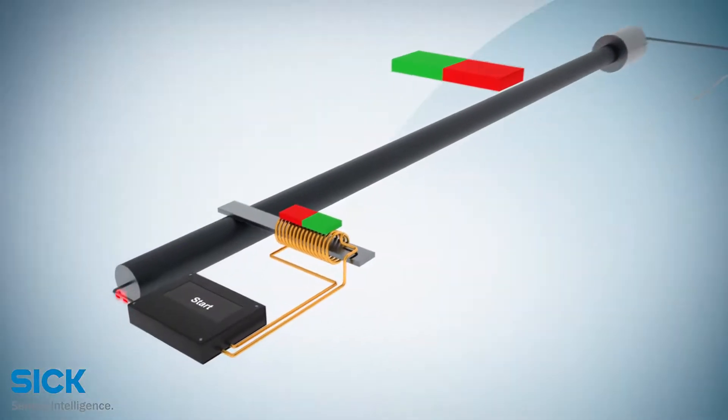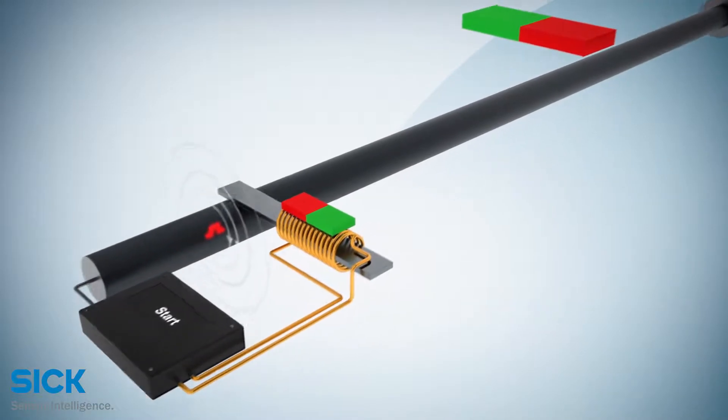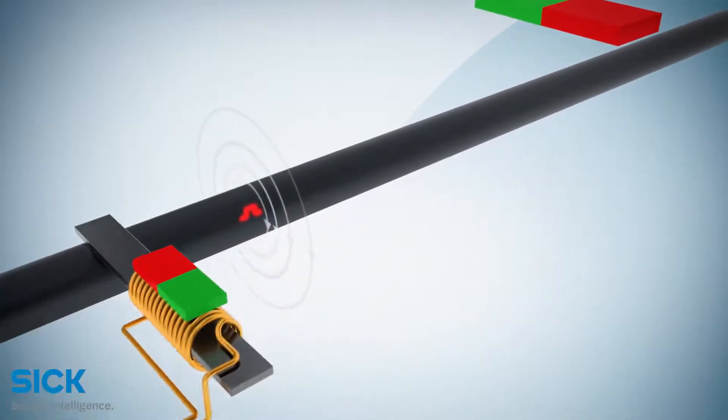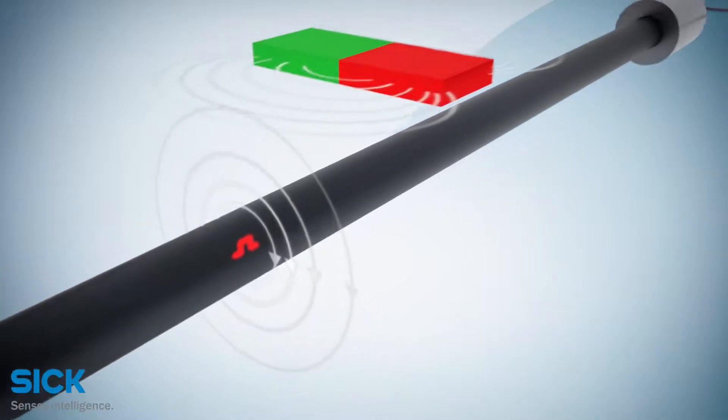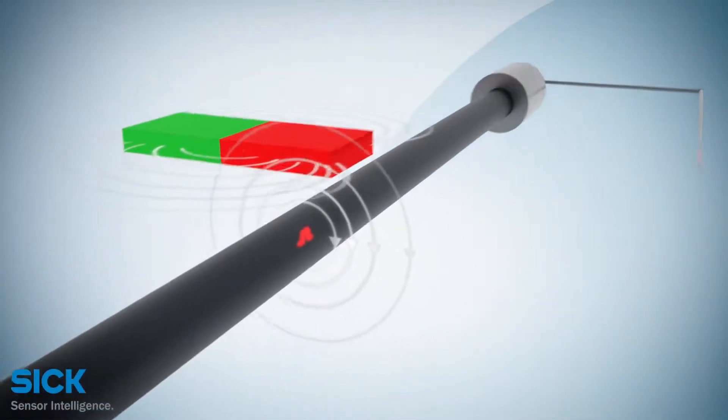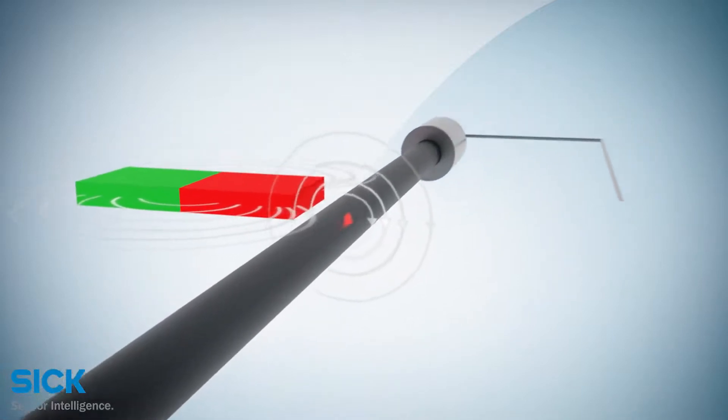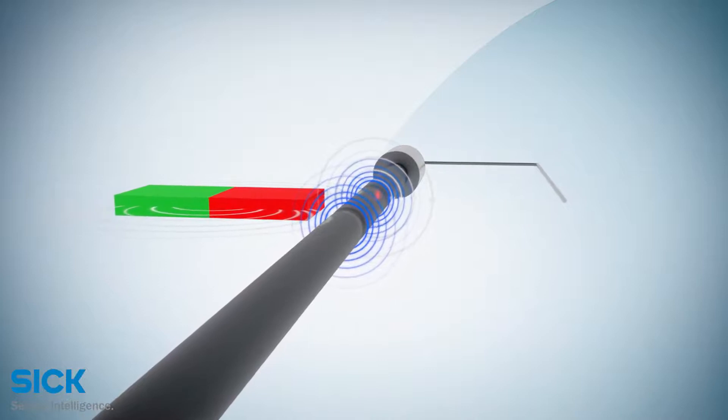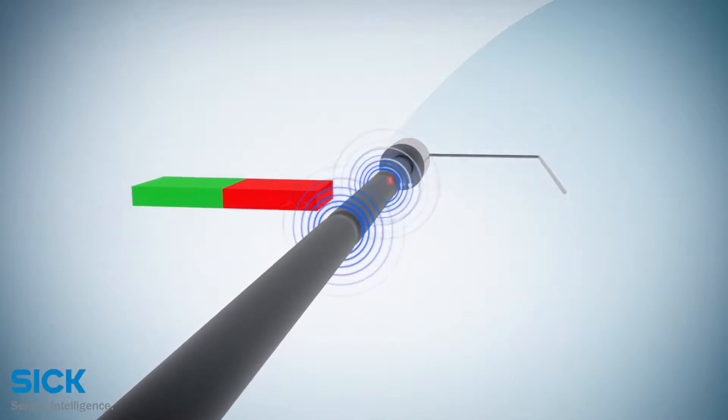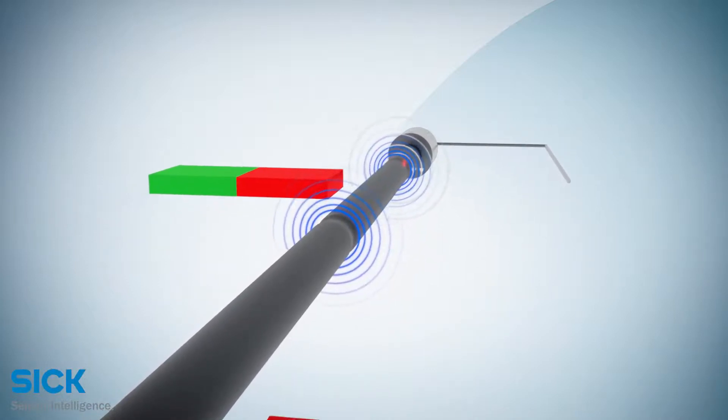A short current pulse is applied to the waveguide and creates a radial magnetic field. The position magnet, which is connected to the movable machine part, generates a magnetic field at its location on the waveguide. The momentary interaction of the magnetic fields causes a torsional strain pulse that propagates the length of the waveguide in both directions.